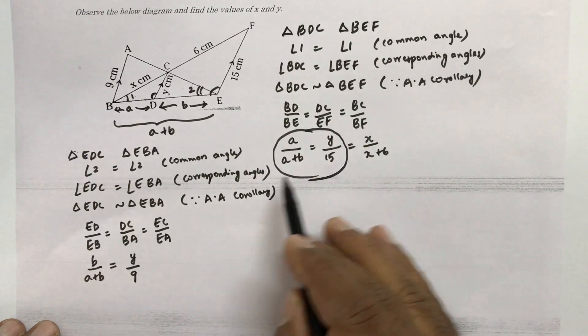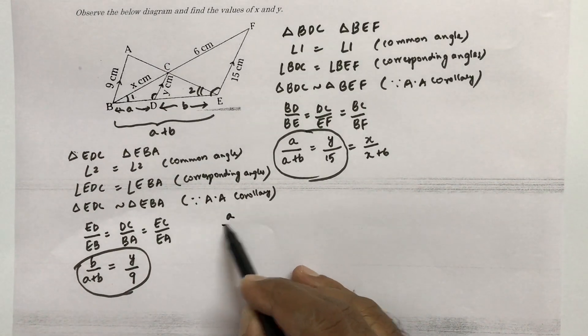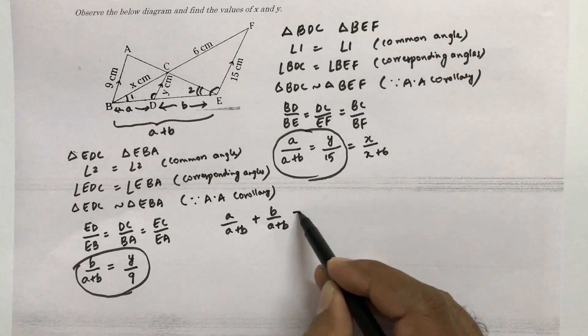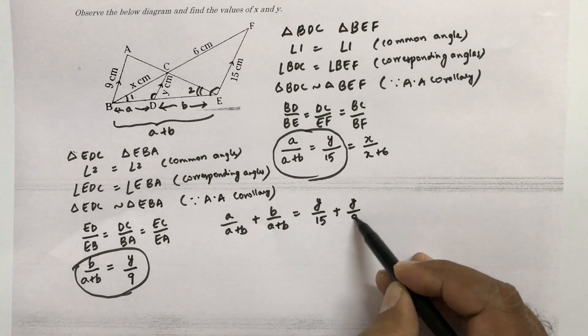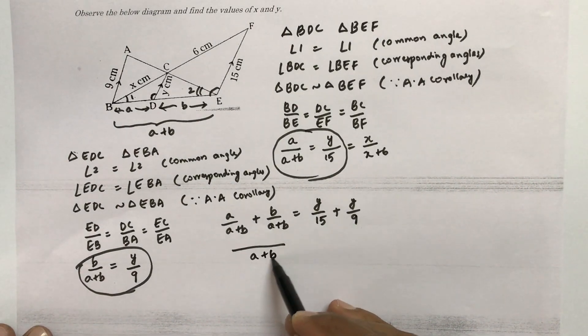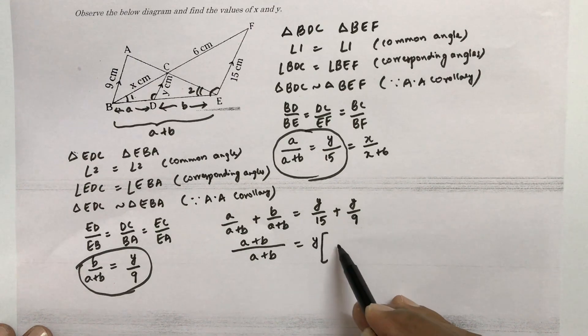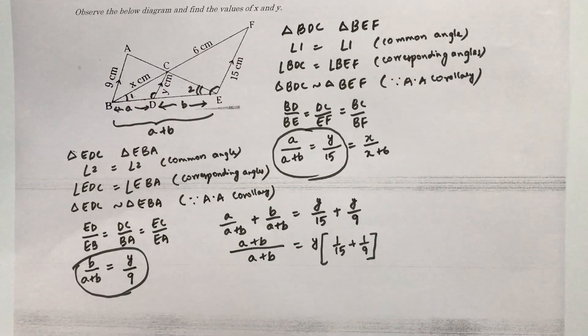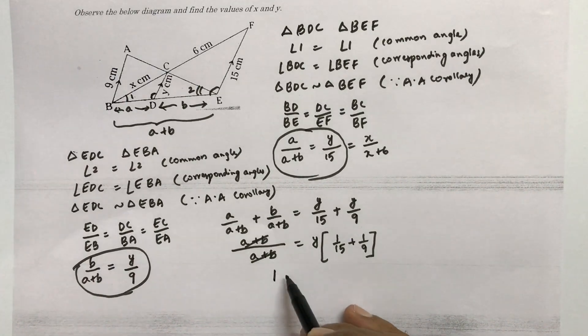Now if you observe this one and this one, what I will do, these two equations like I will add. So if I will add these two, A by A plus B plus B by A plus B equals Y by 15 plus Y by 9. Here LCM is A plus B, so here A plus B. If we take Y common, 1 by 15 plus 1 by 9. Now here A plus B will get cancel.